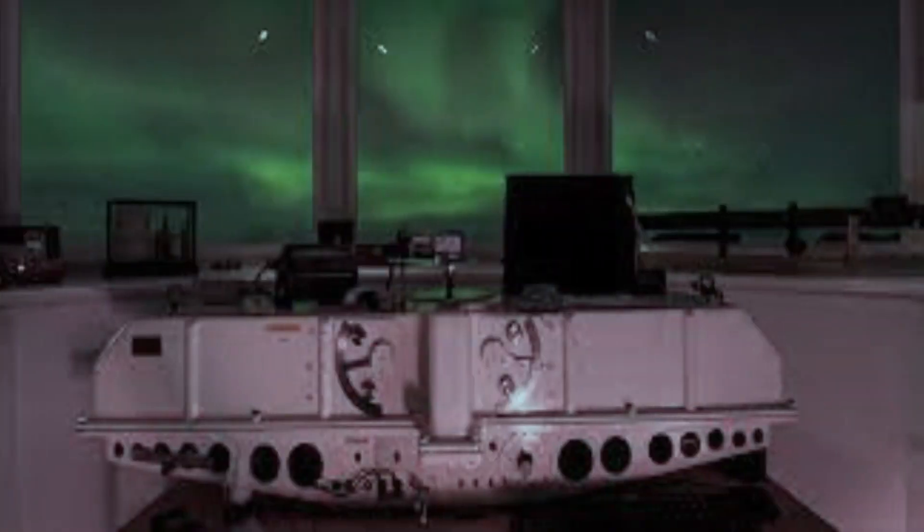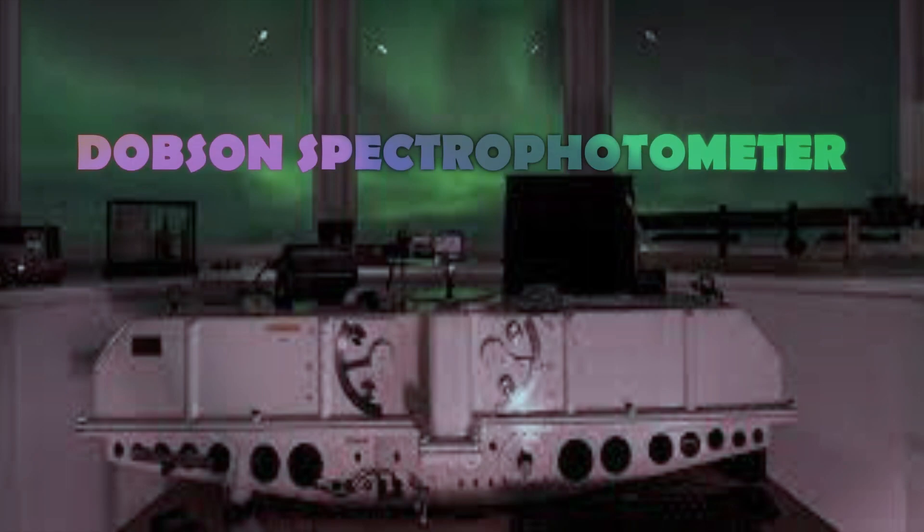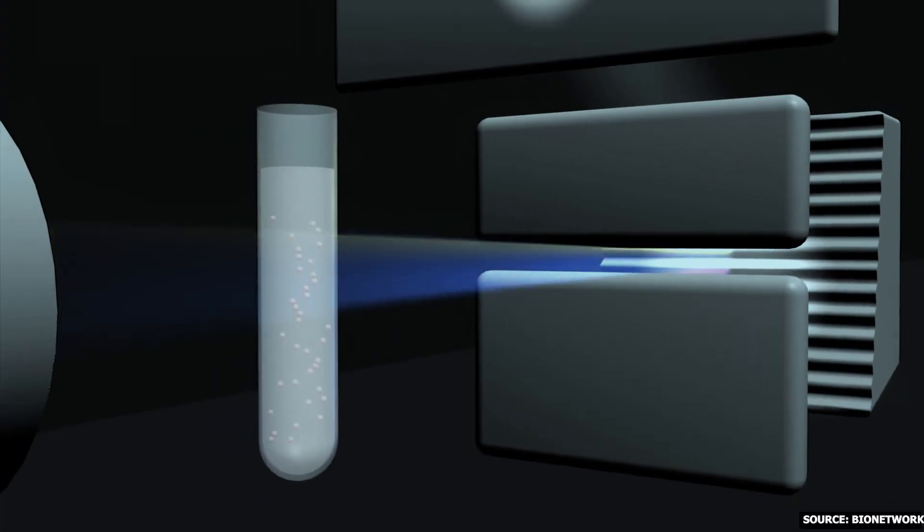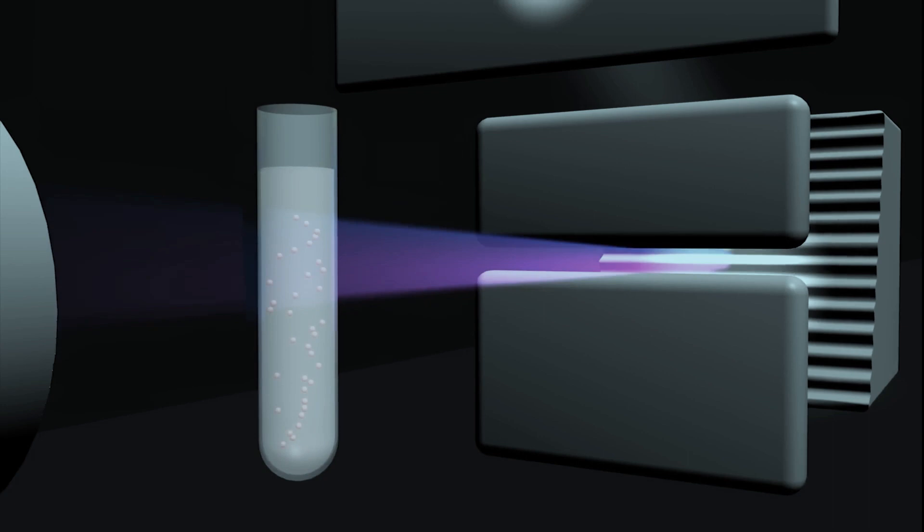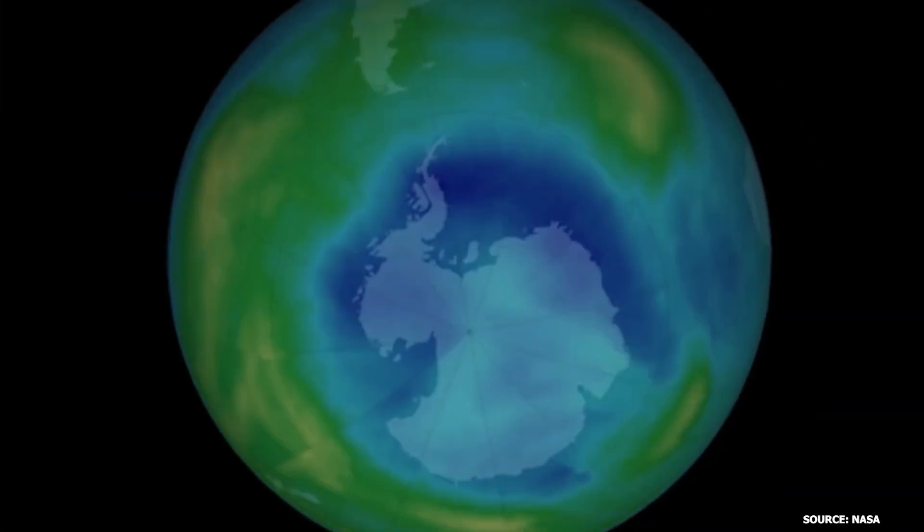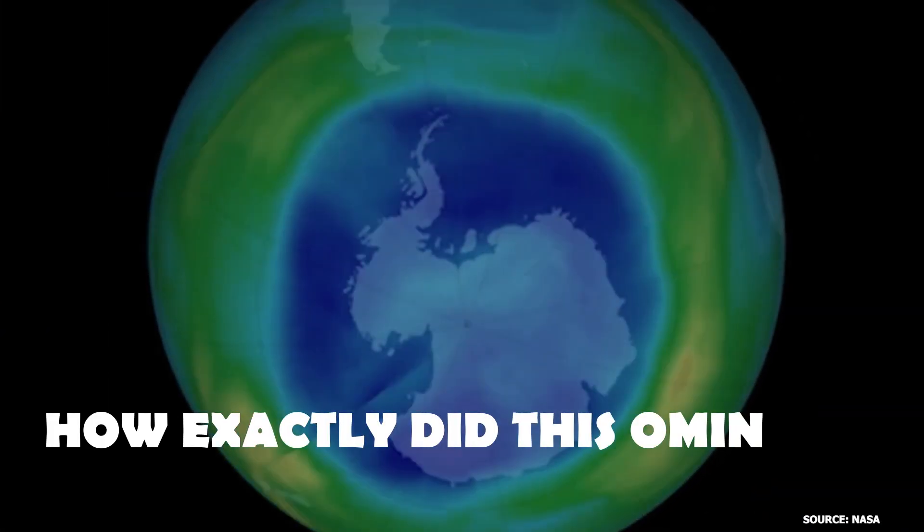In the 1920s, with the invention of the Dobson spectrophotometer, scientists could accurately measure ozone concentrations. Now, returning to the pressing question we posed earlier, how exactly did this ominous ozone hole form?